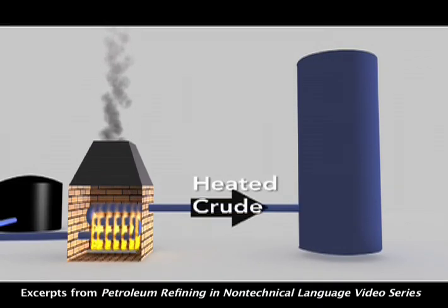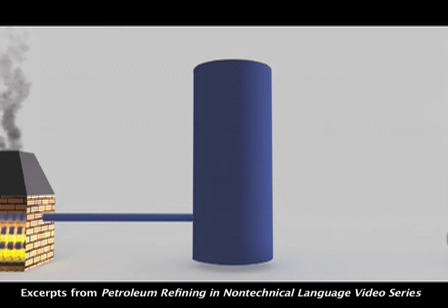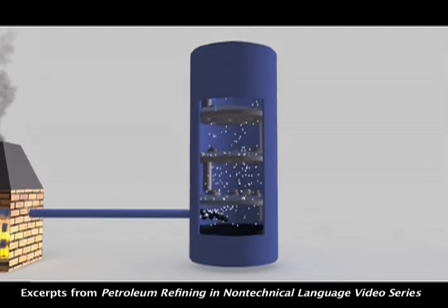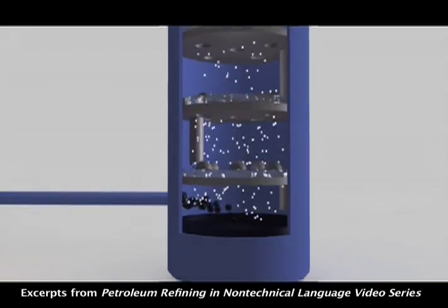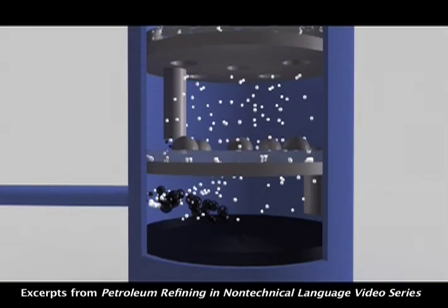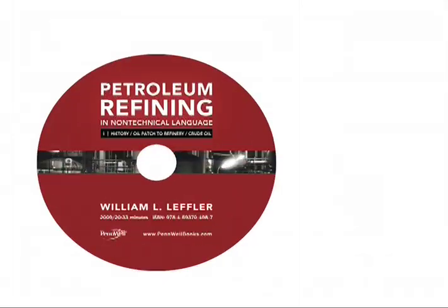Although the inner workings of distilling columns vary, we'll use the simplest design here to describe how the product works. Distilling columns work on basic principles: gravity and temperature. Inside the distilling columns are perforated trays — maybe a hundred or so — that sit one or two feet apart. The perforations in these trays allow the crude oil vapors to rise through the column and the crude oil liquids to fall.